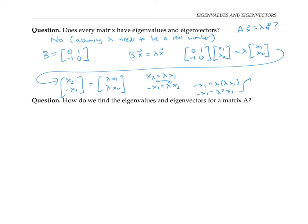So either x₁ is zero, or we can divide both sides by x₁ and get lambda squared equals negative one. If we're looking at real eigenvalues, no real number squares to give a negative number, so x₁ must equal zero. But then going back to the first equation, x₂ is also zero. So the only way to satisfy this equation is to use the zero vector for x. But as we said before, the zero vector doesn't count as an eigenvector. So in fact, there are no real eigenvalues or eigenvectors that work for matrix B.